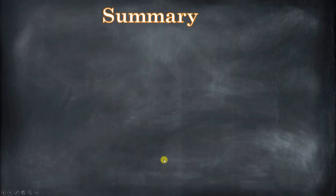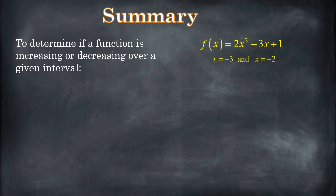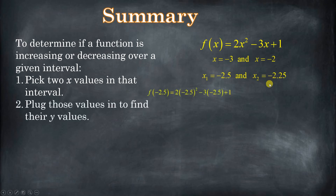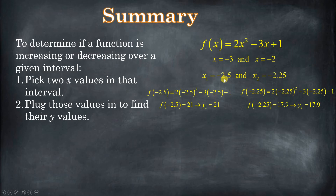To summarize, let's put this all together. If you're going to determine how a function is behaving over a certain interval — whether it's increasing or decreasing — you first pick two numbers. Let's say the function is 2x squared minus 3x plus 1, and the interval is from negative 3 to negative 2. You pick two x values in that interval — we could pick negative 3 and negative 2, or any two values in that interval. For this example, let's do negative 2.5 and negative 2.25. After you plug those in, when I plug in negative 2.5, I get 21; when I plug in negative 2.25, I get 17.9, so almost 18.